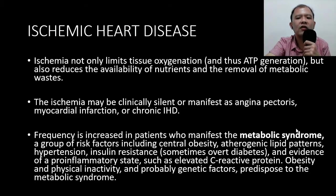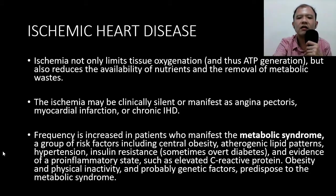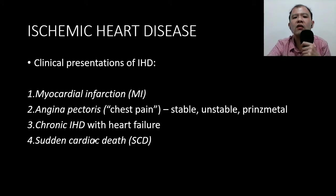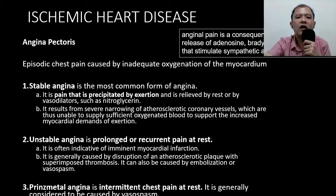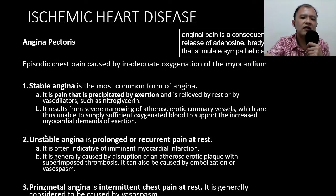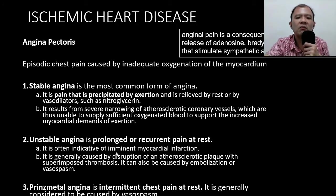When we say metabolic syndrome, it is composed of: high blood sugar, hypertension, obesity, and dyslipidemia — all these factors contribute to a pro-inflammatory state. Clinical presentations range from mild chest pain to myocardial infarction, chronic ischemic heart disease, or sudden cardiac death. The chest pain can either be stable angina — relieved by rest and medication — or unstable angina, which is not relieved by rest and becomes worse because it is a sign of impending myocardial infarction.